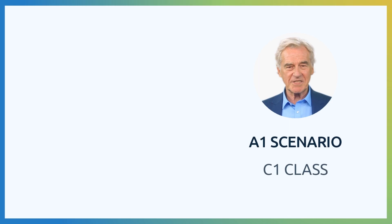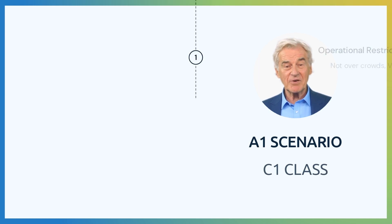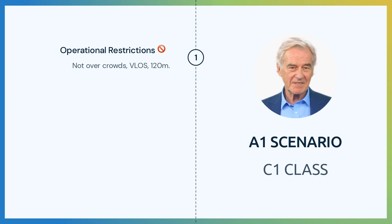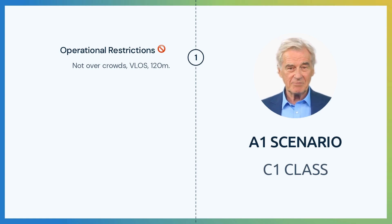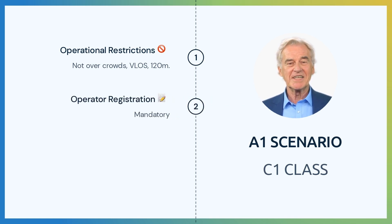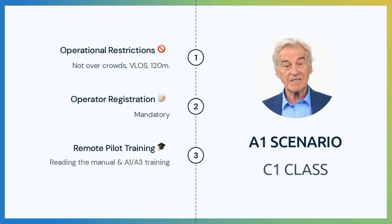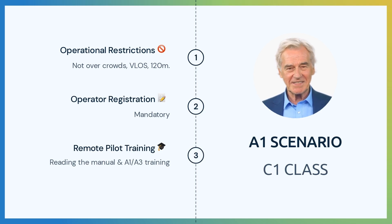The A1 scenario also has drones with a C1 class. Drones with C1 class will have the following operational restrictions. Flying over people not involved should be avoided and it is not allowed to fly over crowds. You shall fly in visual line of sight. The maximum height for a flight is 120 meters above the ground. Operator registration is mandatory for this class. Reading the manual provided by the manufacturer is required, as well as completing the A1-A3 training and examination.